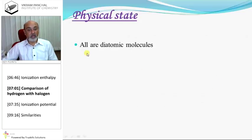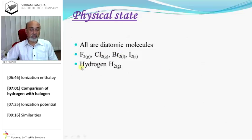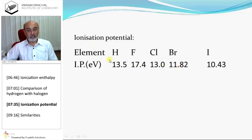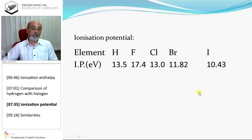Physical state: all are diatomic molecules. Fluorine and chlorine are in the gaseous state, bromine is liquid, and iodine is solid. Hydrogen is also in the gaseous state. Ionisation potential: hydrogen is 13.5, fluorine is 17.5, chlorine is 13.11, bromine is 11.82, iodine is 10.43 — all have very high ionisation potential.